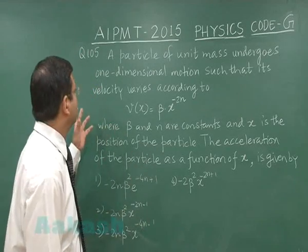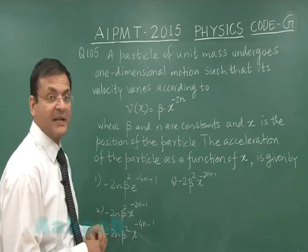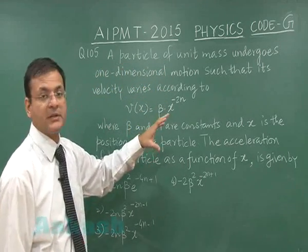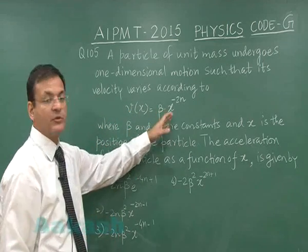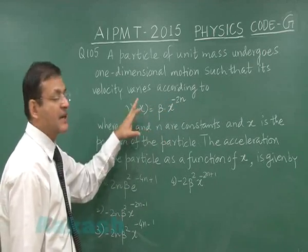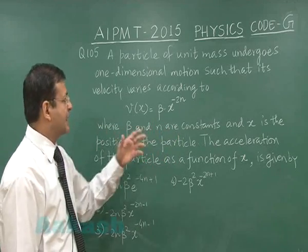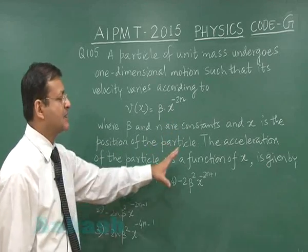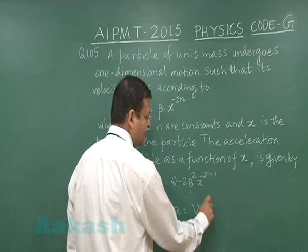Question 105 is a straightforward application of calculus in mechanics. A particle of unit mass undergoes one-dimensional motion such that its velocity varies as v = βx⁻ⁿ, where β and n are constants and x is the position. We need the acceleration as a function of x. Acceleration has the standard expression a = v·dv/dx, since v is given as a function of x.